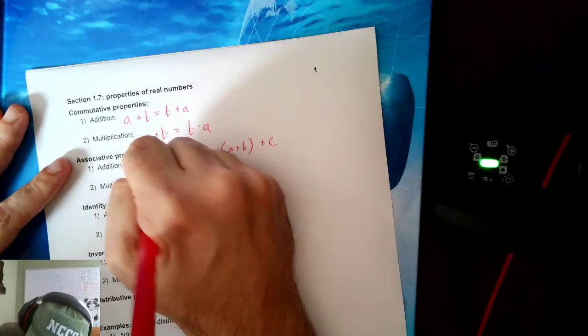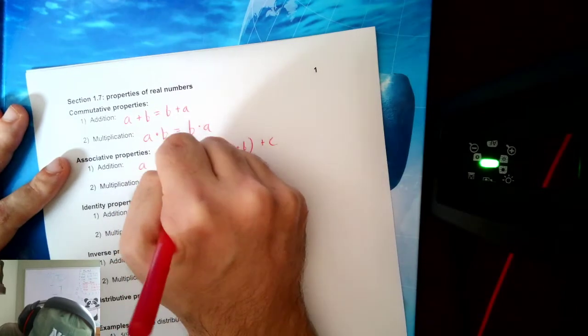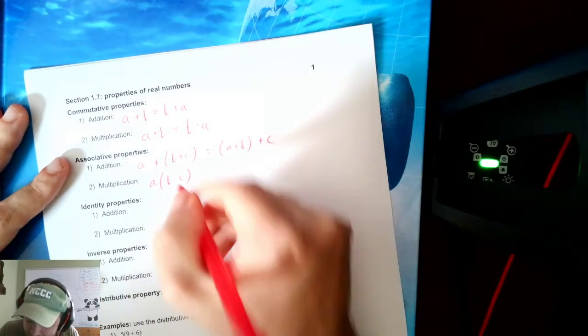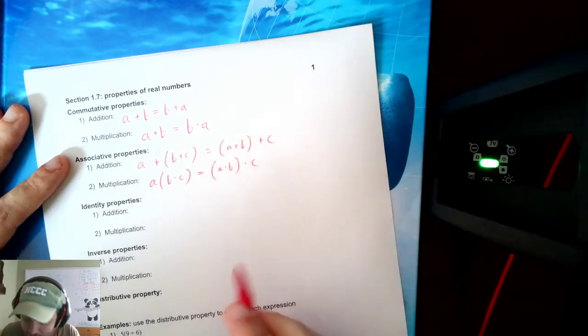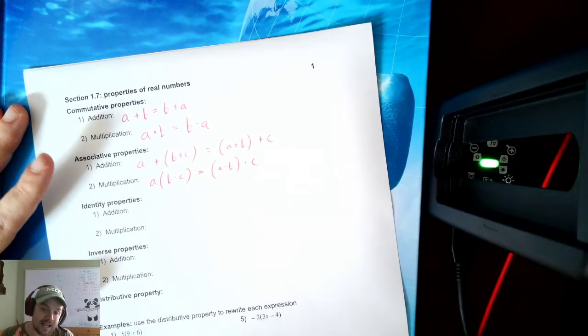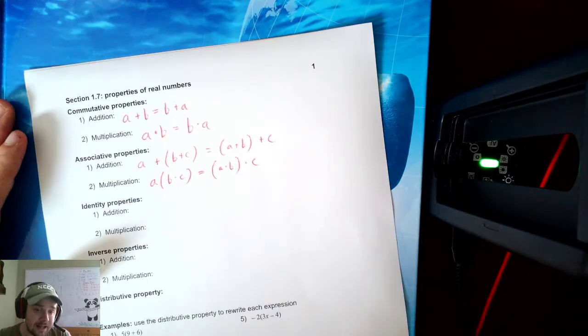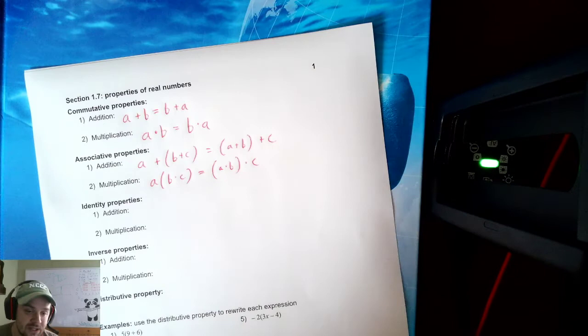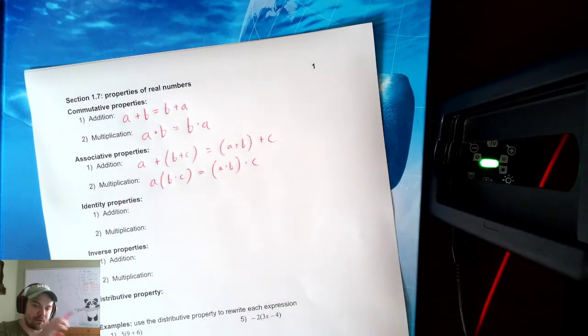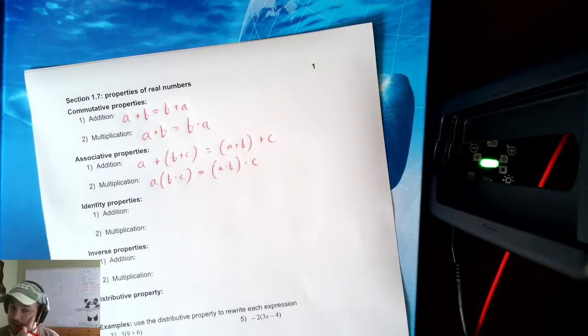And same for multiplying. If I do a times b times c, I do b times c first, or if I do a times b first and then multiply by c. Notice it's all the same operations. Addition itself and multiplication itself are very forgiving with the order you do it in. The only issues are when there's multiple different operations. That's when we have to follow a specific order.